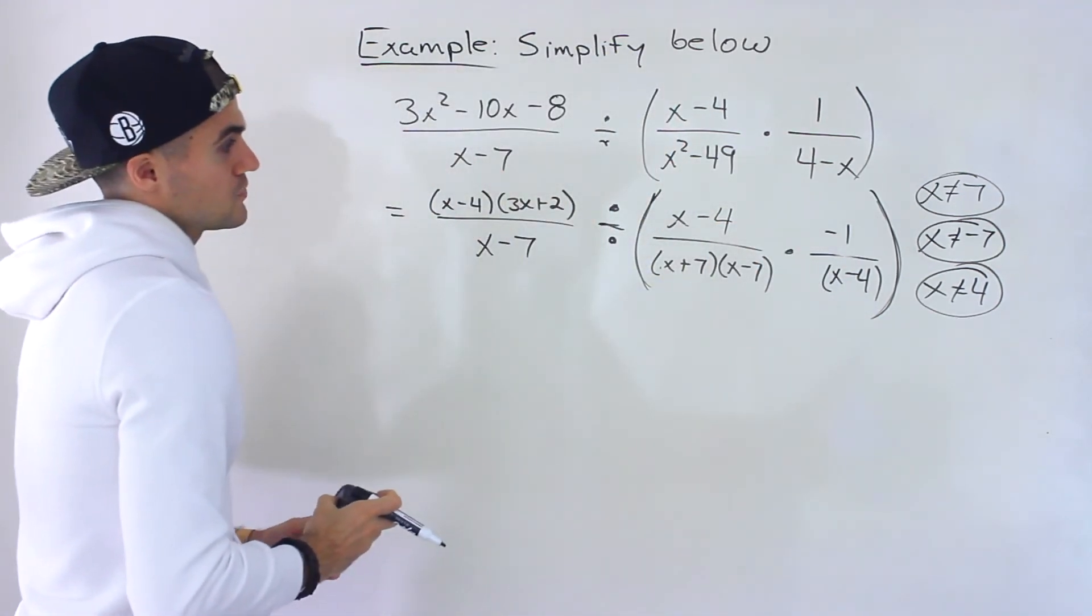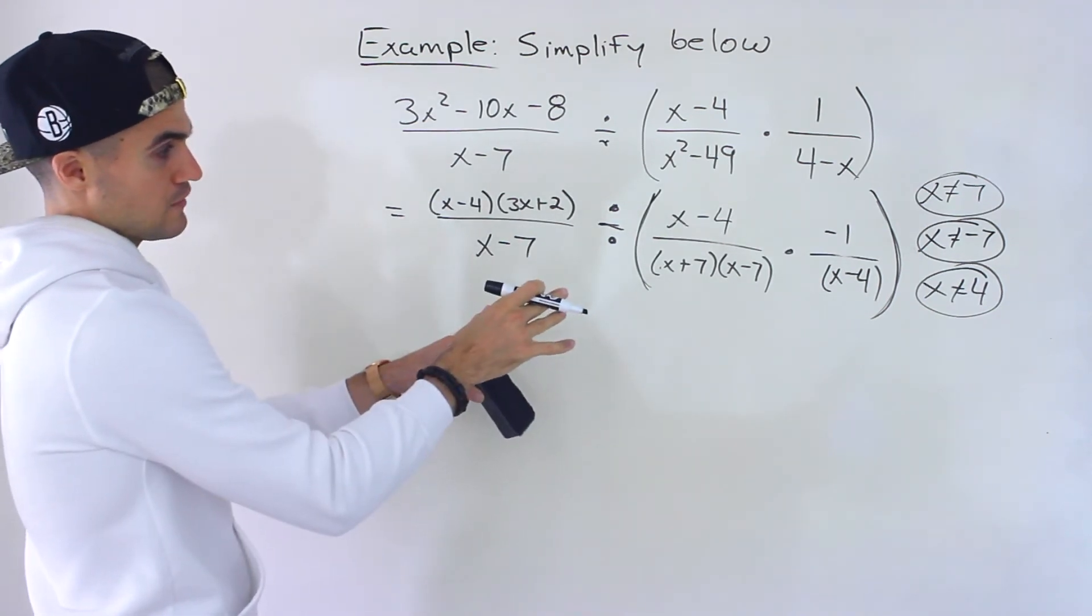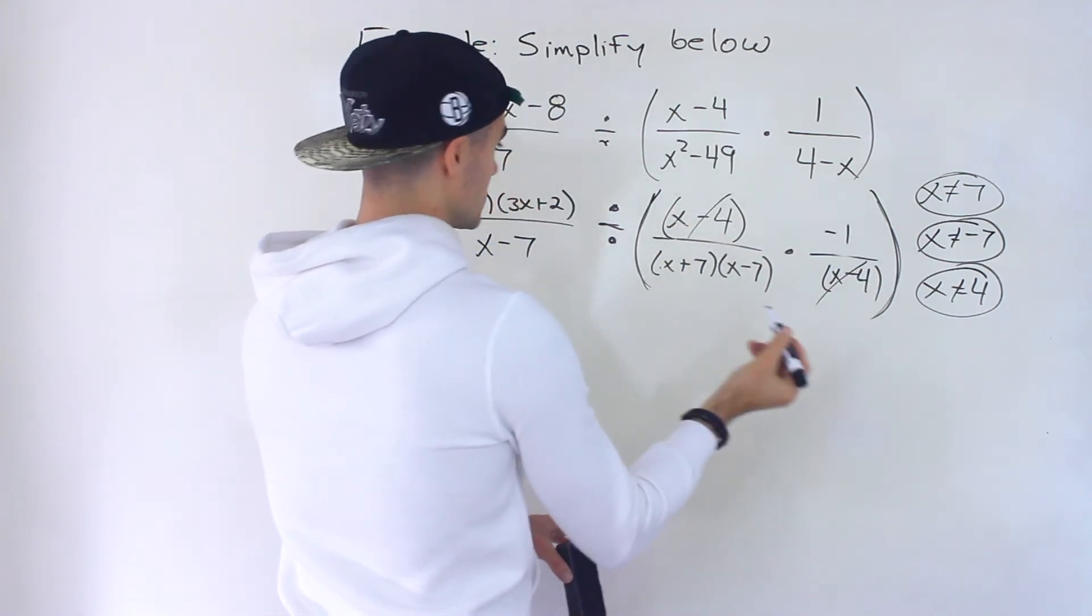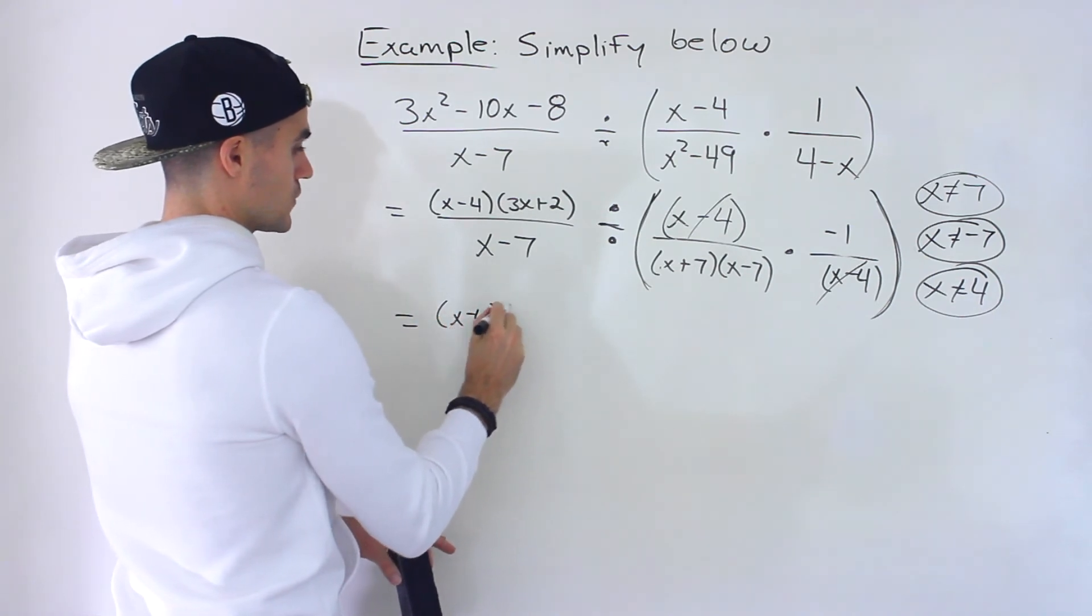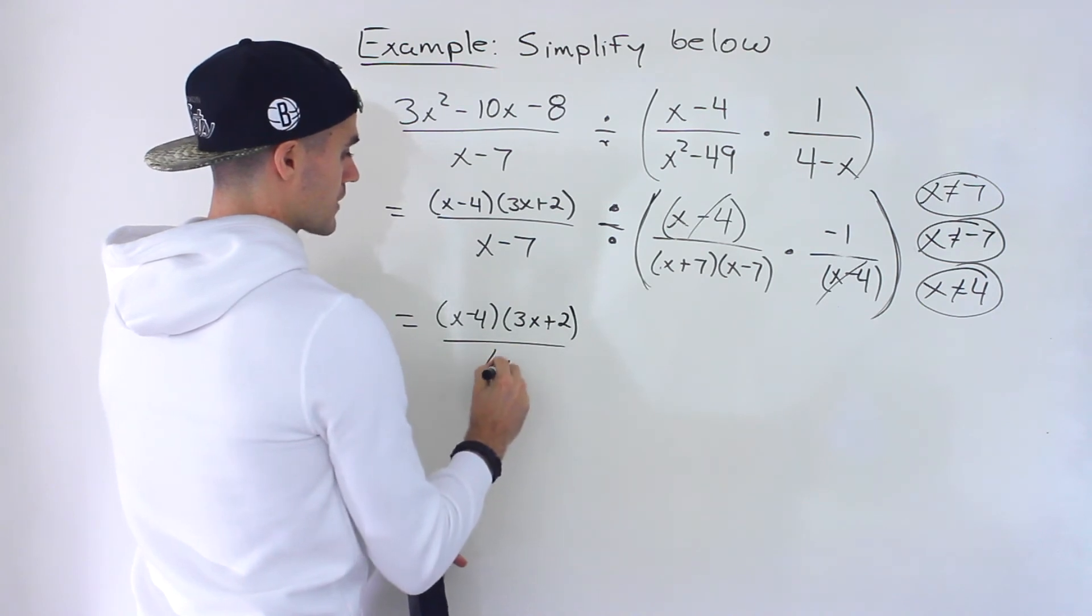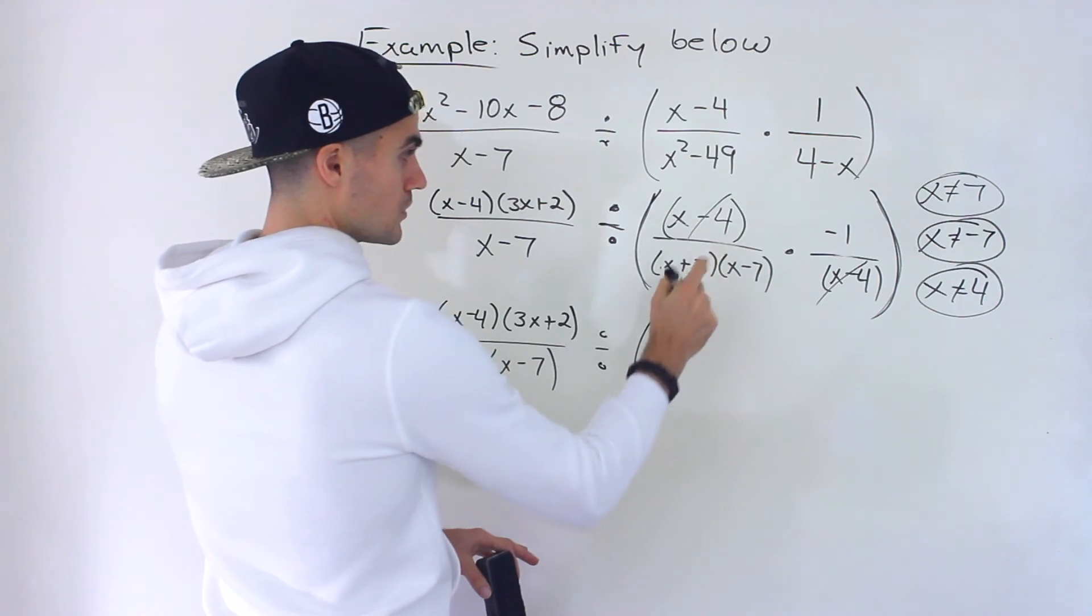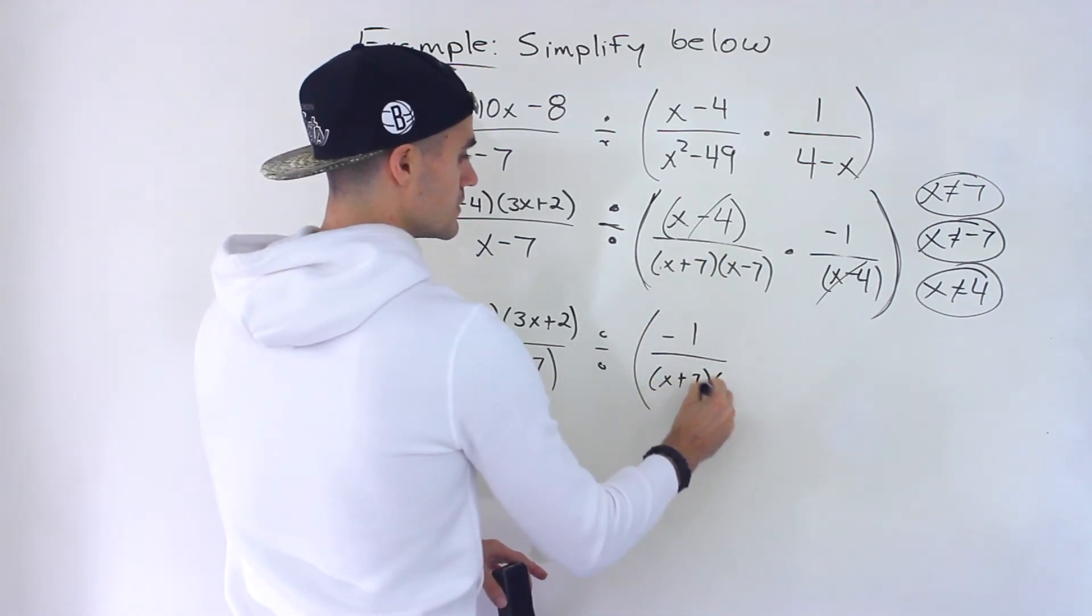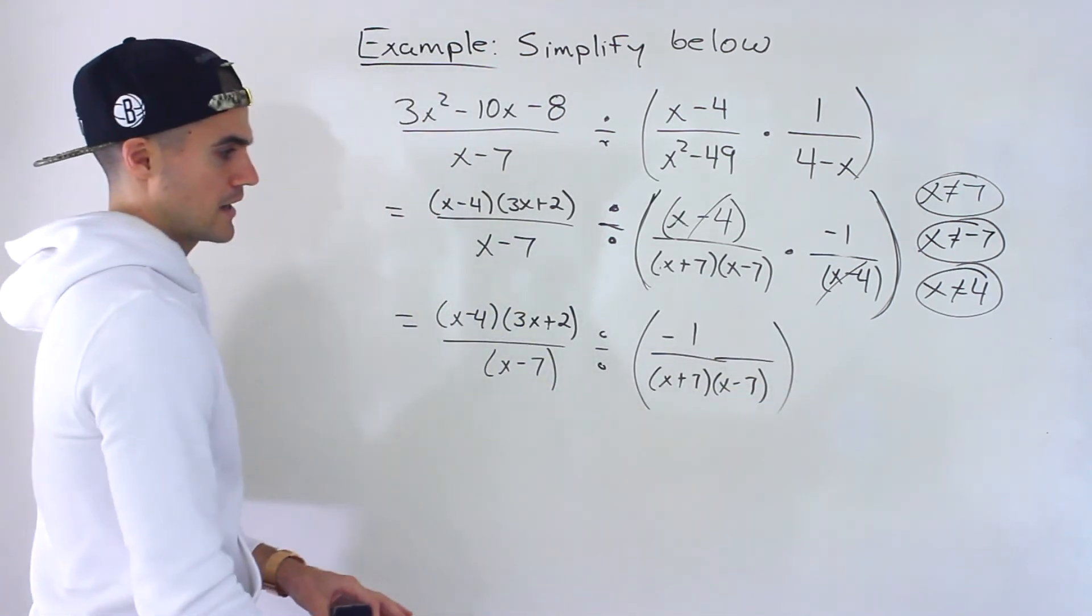All right and then we have the restrictions and so from here it's just simplifying. So we want to work with the bracket first. Multiplying these two notice the x minus 4s would cancel out and so working in steps here we'd have x minus 4 times 3x plus 2 over x minus 7 and we're dividing by what would we be left with here negative 1 over x plus 7 times x minus 7.